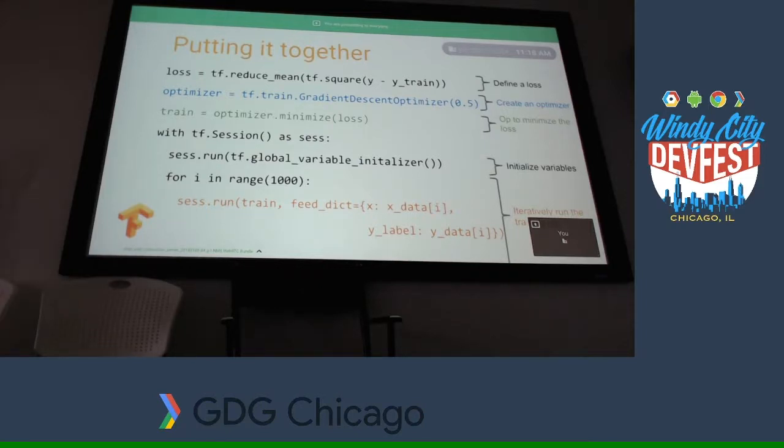It's possible that if you take 1,000 steps, you maybe didn't find the absolute best solution. That's true — we will see that in the example.